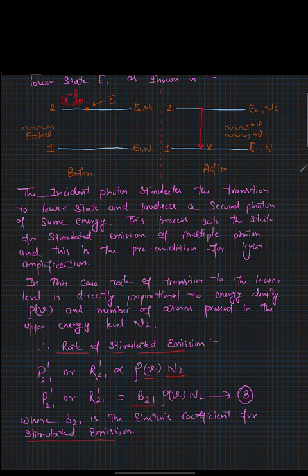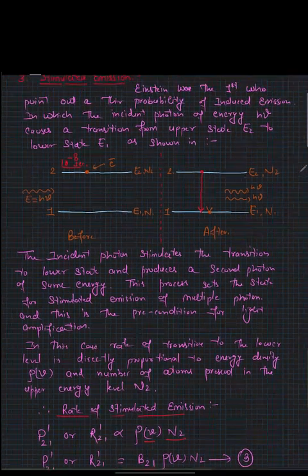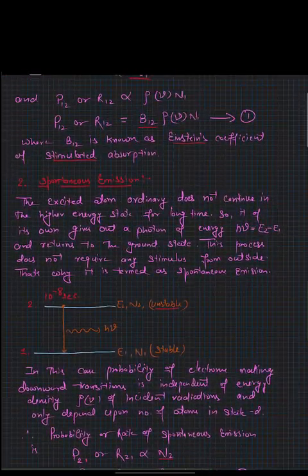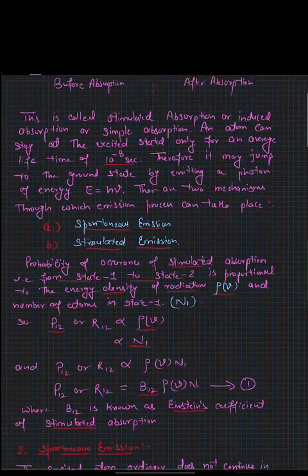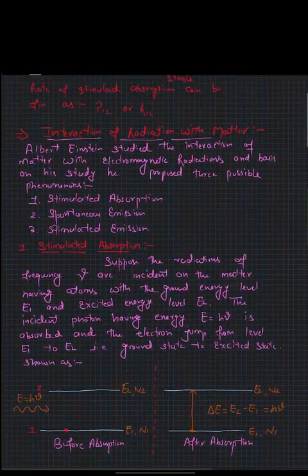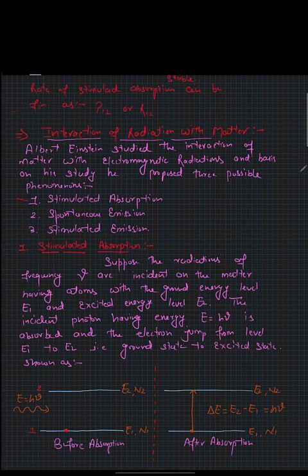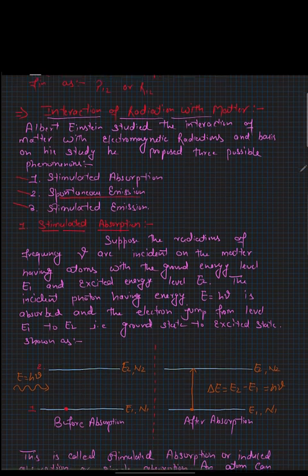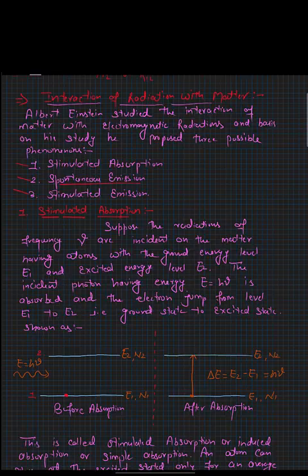In summary, during the interaction of radiation with matter, three possible phenomena can occur: stimulated absorption, spontaneous emission, and stimulated emission. Spontaneous emission is the natural process — once a photon is absorbed, it must be released by the electron because the excited state is unstable. This is all about the interaction of radiation with matter. Thank you so much.